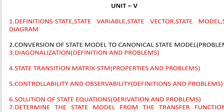In unit 5, the first important topic is definitions: state, state variable, state vector, state model, and state diagram — previously asked as long questions as well. The second topic is conversion of state model to canonical state model, a big problem requiring eigenvalues and eigenvectors, and matrix inverse. The third topic is diagonalization — definition for two marks and problem for long answer. If you can solve the canonical state model, the diagonalization problem becomes easier.